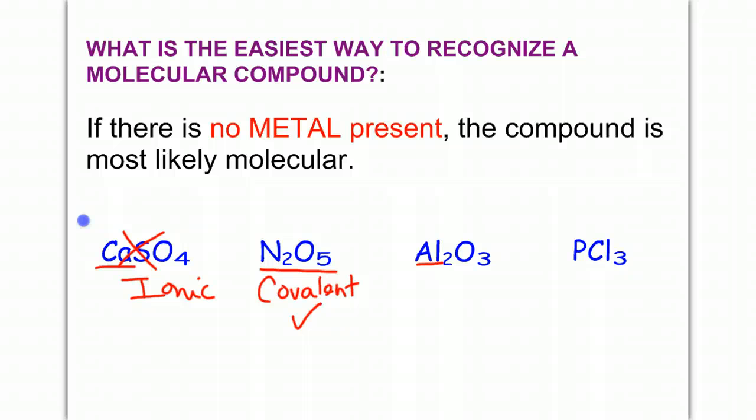Al2O3, because aluminum is a metal, we're going to go ahead and call this ionic. And PCl3 is two non-metals, so this one is covalent.